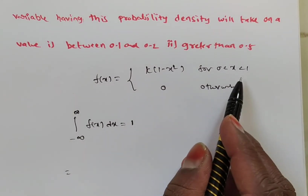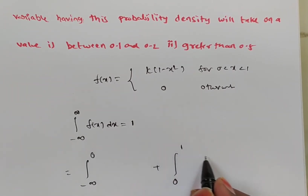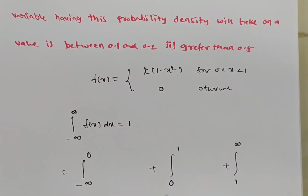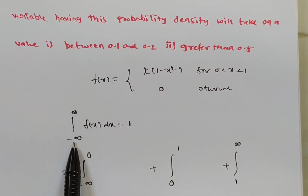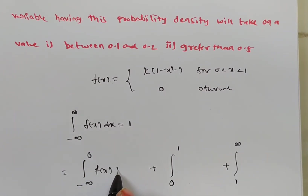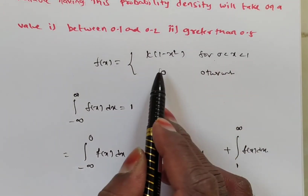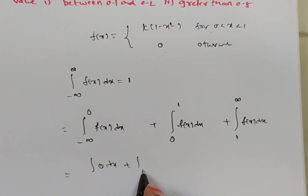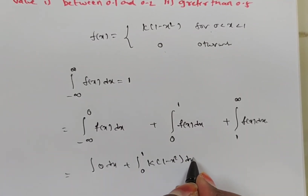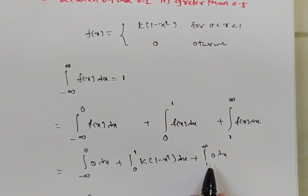We split the integral from minus infinity to infinity as: integral from minus infinity to 0, plus integral from 0 to 1, plus integral from 1 to infinity. Since the function is 0 outside 0 to 1, the first and third integrals equal 0. So we only need to solve the integral from 0 to 1 of k(1 minus x squared) dx.